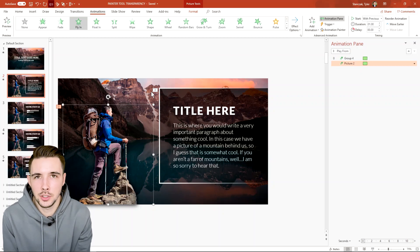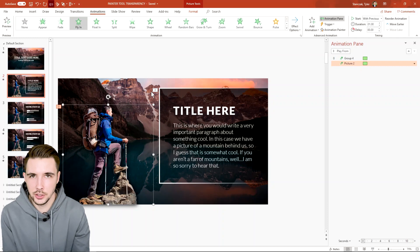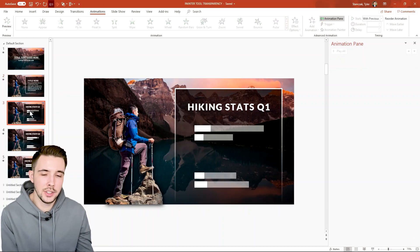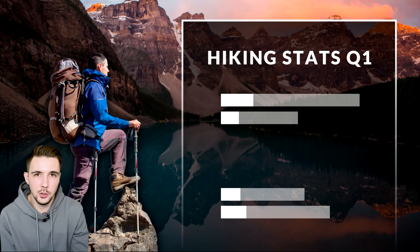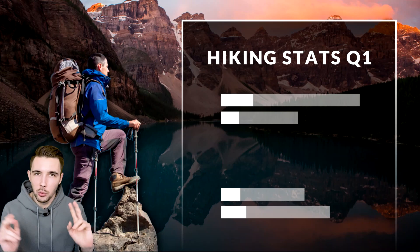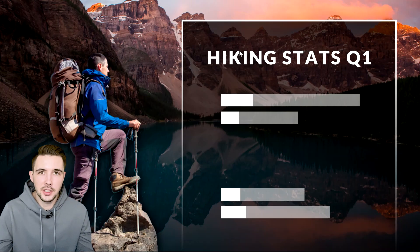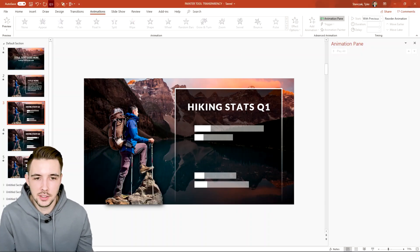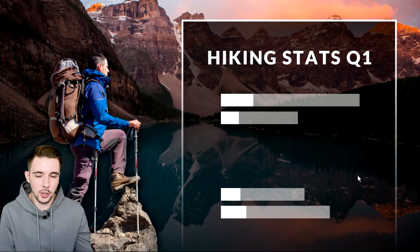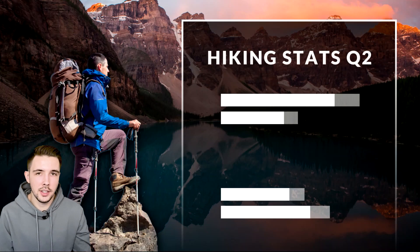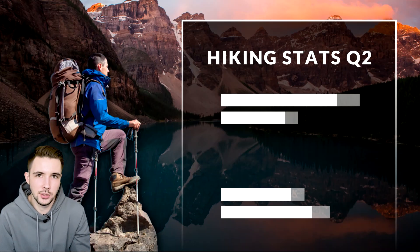The last animation is a little outside of the Animation Pane, but it's still a type of animation. In slide three, if you go to presentation mode you'll see a man hiking with stats for Q1. We have Q1 here and Q2 here — when I hit the right arrow, the bars grow from left to right and then it changes to Q2.